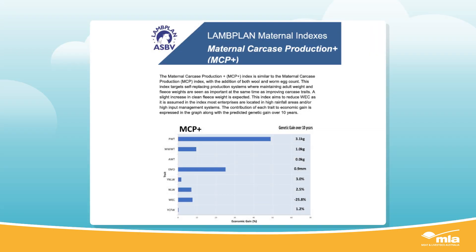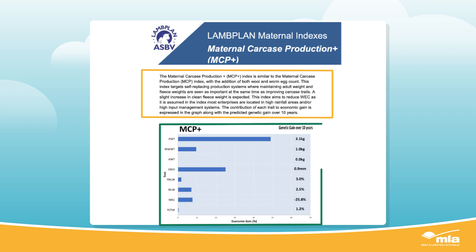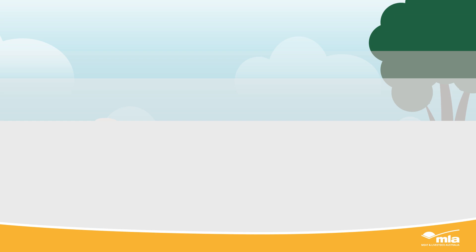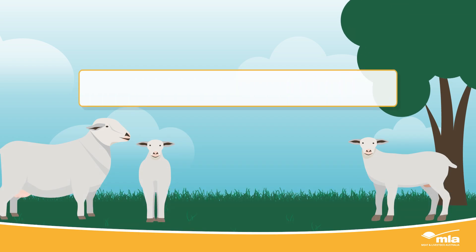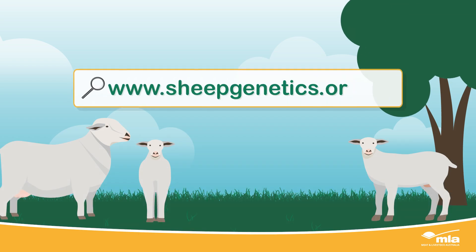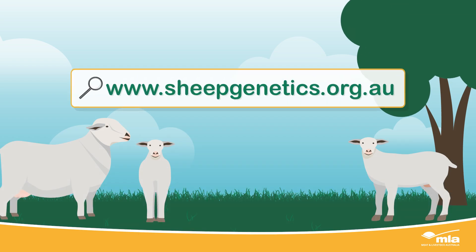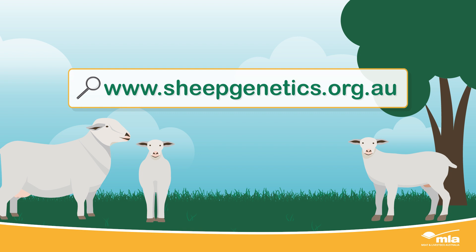Each index has both a production system description and a graph displaying the traits and their economic impact. You'll find these index descriptions at the Sheep Genetics website link.